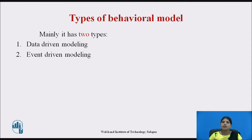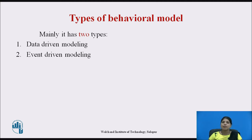Data driven modeling means some data arrives that has to be processed by the system, and event driven modeling means some event happens that triggers system processing and events may have associated data. First we will see in detail about data driven modeling, and later discuss about event driven modeling.